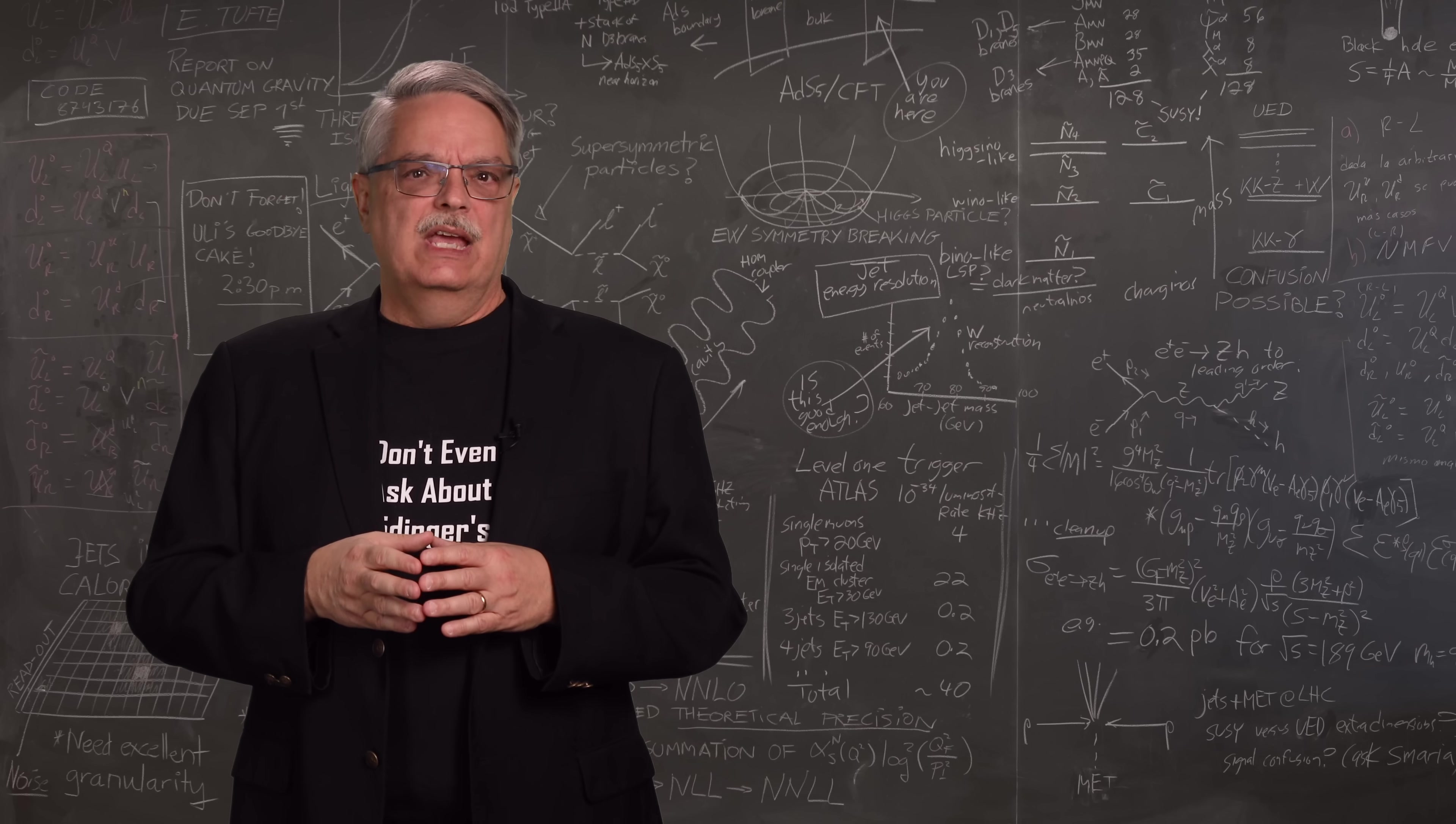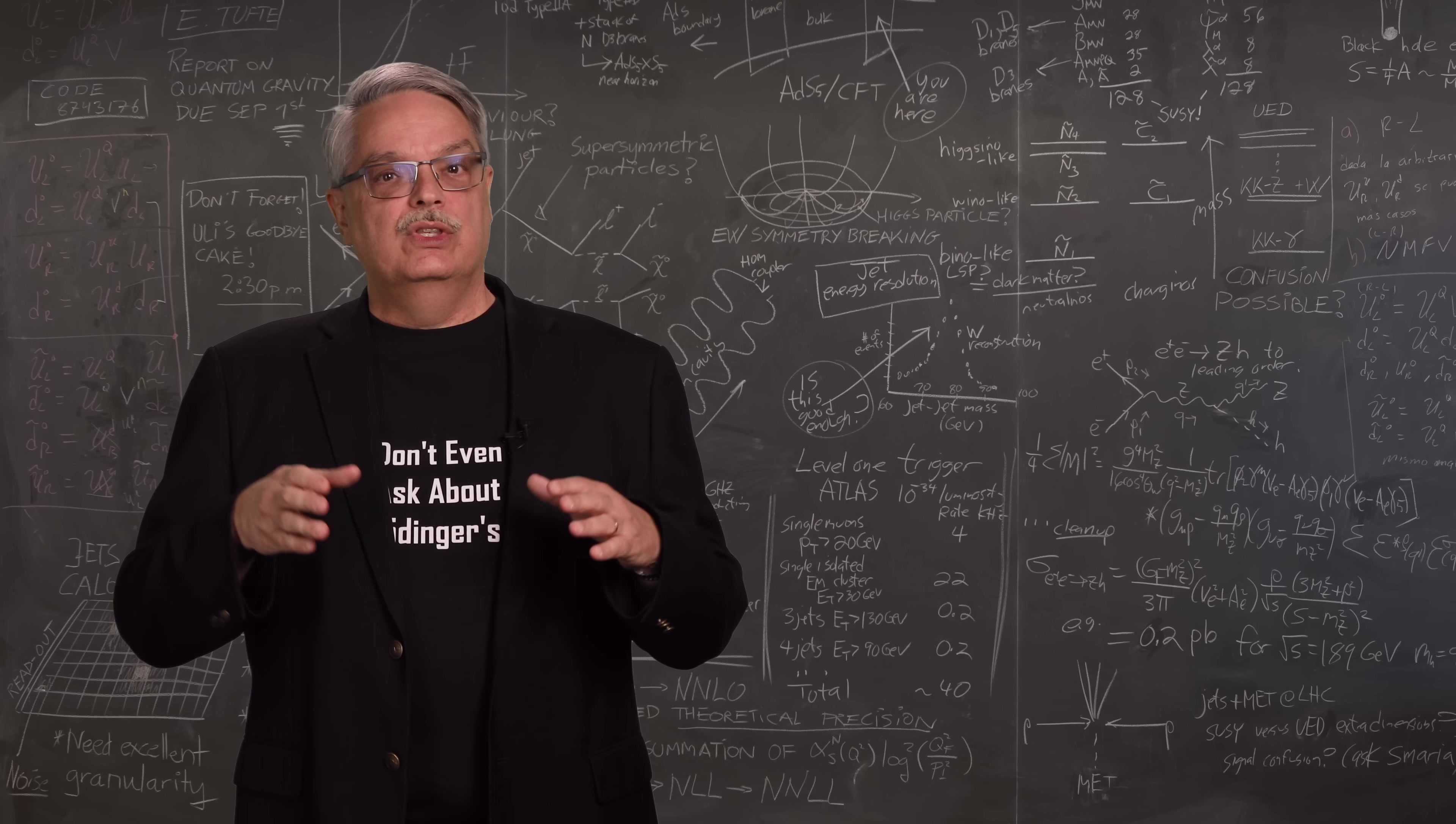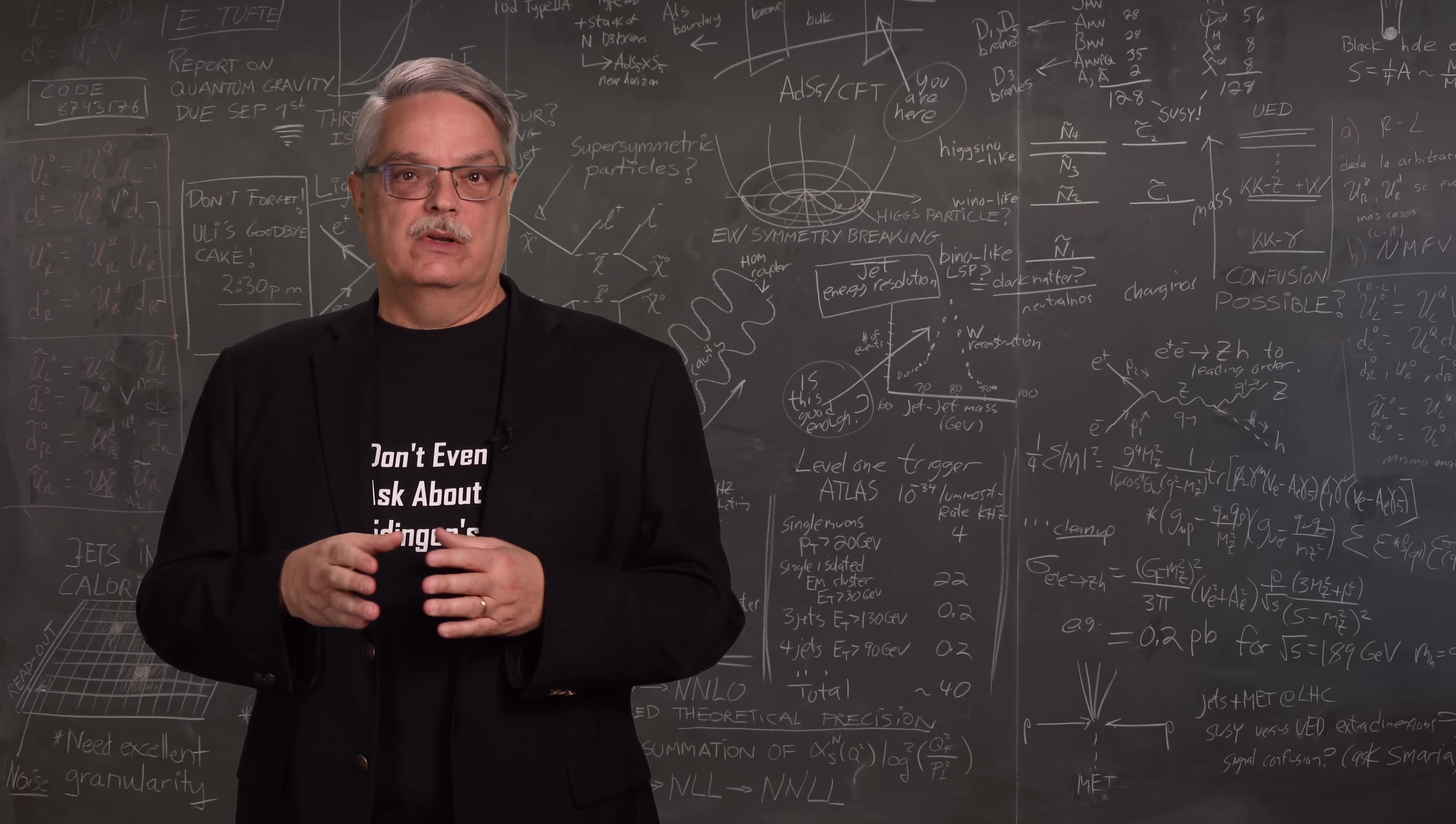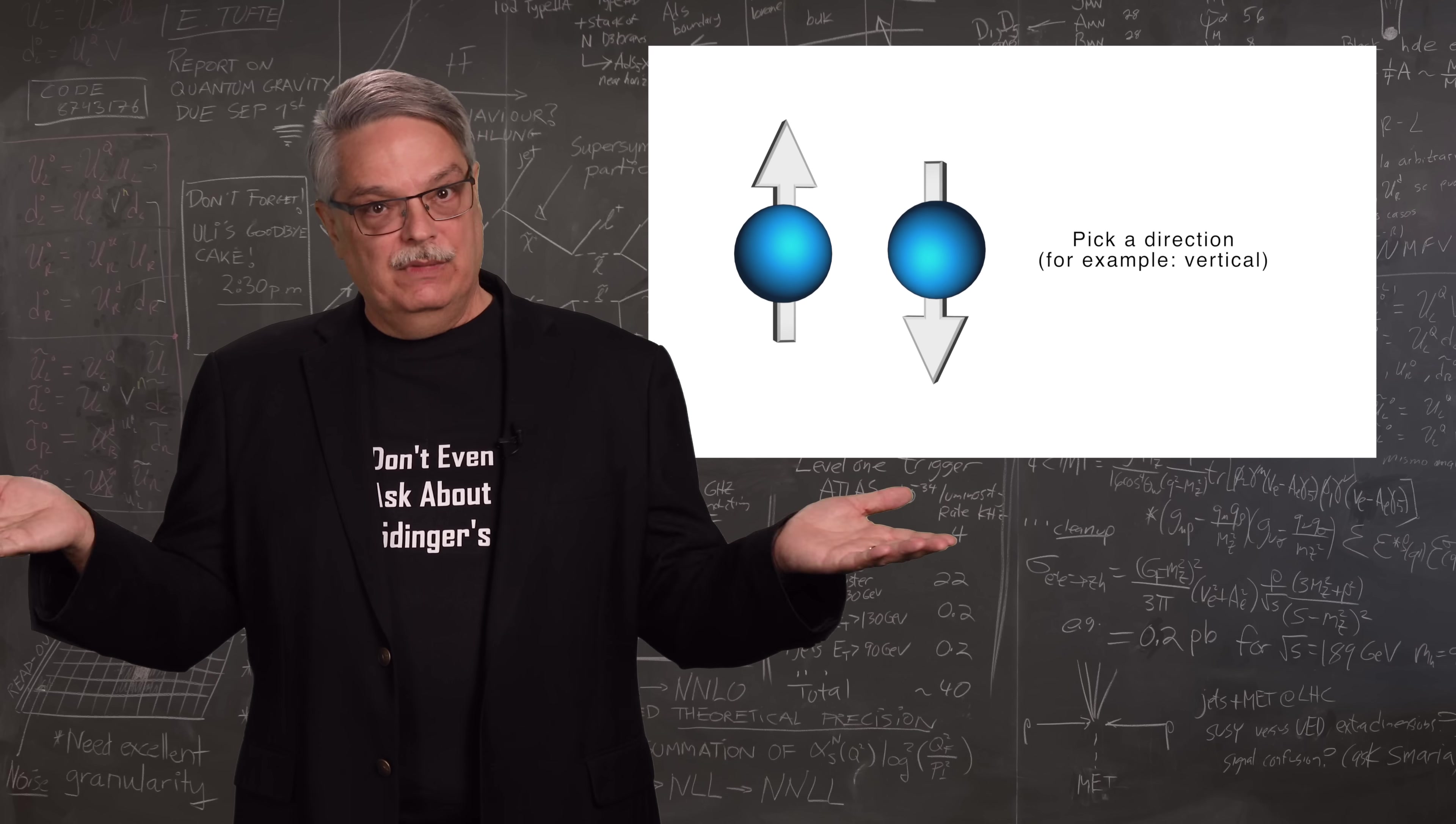To give a concrete example of what I mean by the word configuration, let's use the direction of the spin of a particle. There is a quantum weirdness in that when you measure the direction of the spin of a particle, you first have to pick a direction, and then the outcome will always be either in the direction you picked or exactly opposite. It can't be anywhere in between.